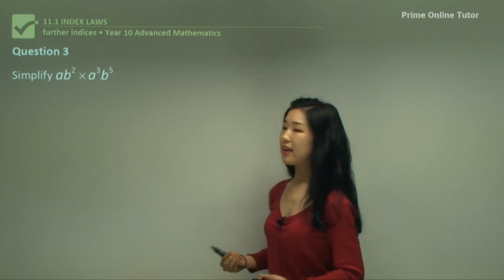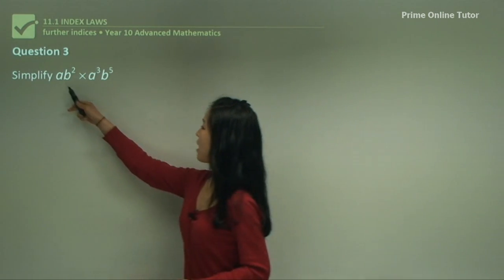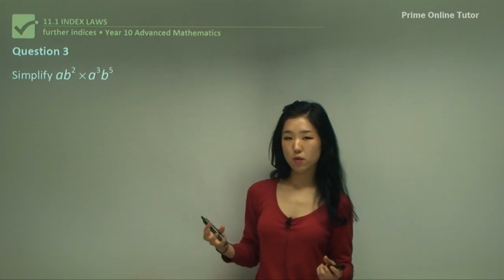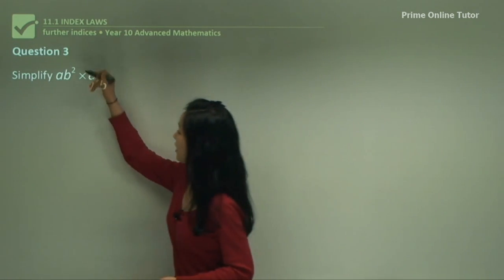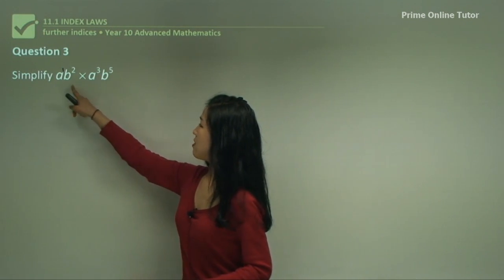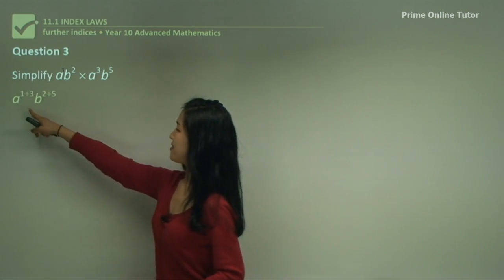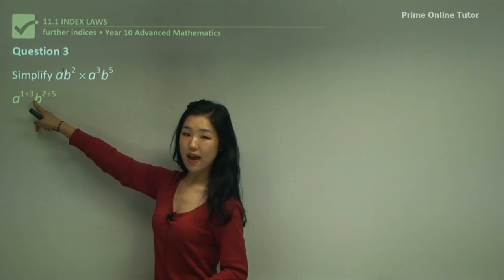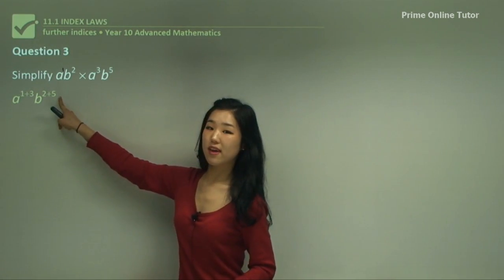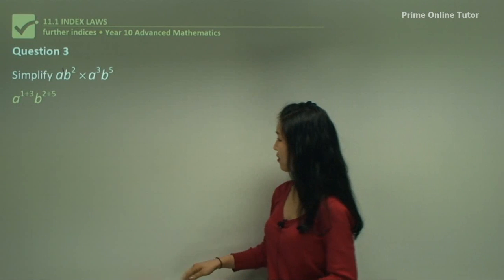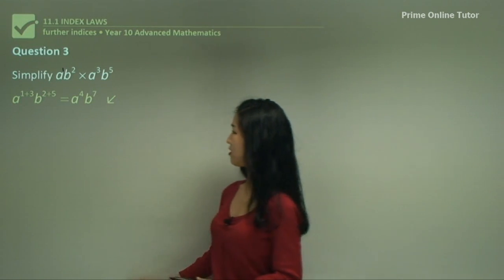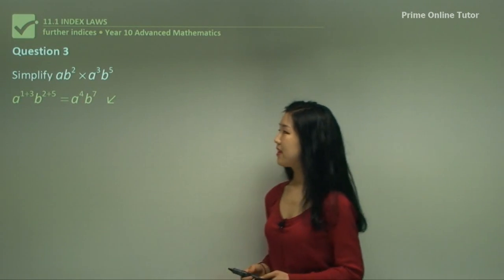Question three. Now we have to match the same base. We have a and a here, and b and b here, so we put the a's together and the b's together. a has a power of 1 and the other a has a power of 3, and we work with the b's together. So a to the power of 1 plus 3, and b to the power of 2 plus 5. Simplifying gives a to the power of 4 and b to the power of 7.